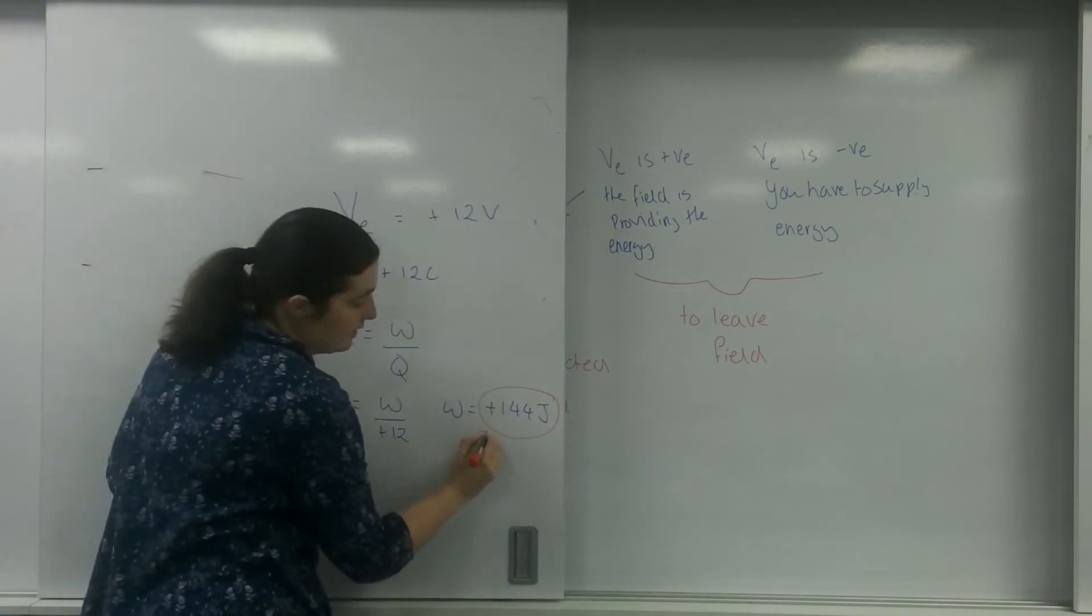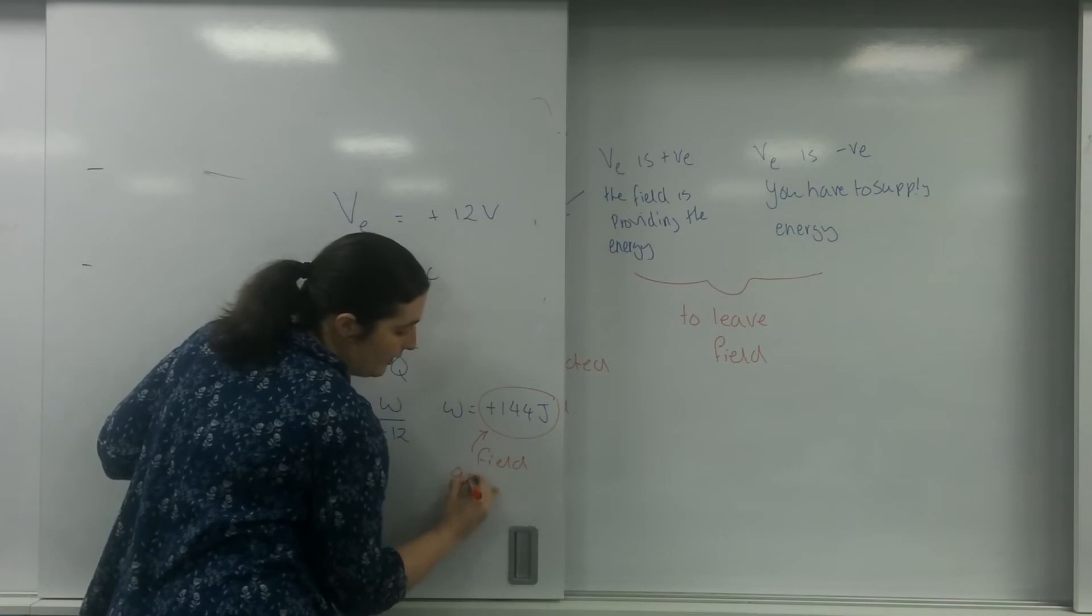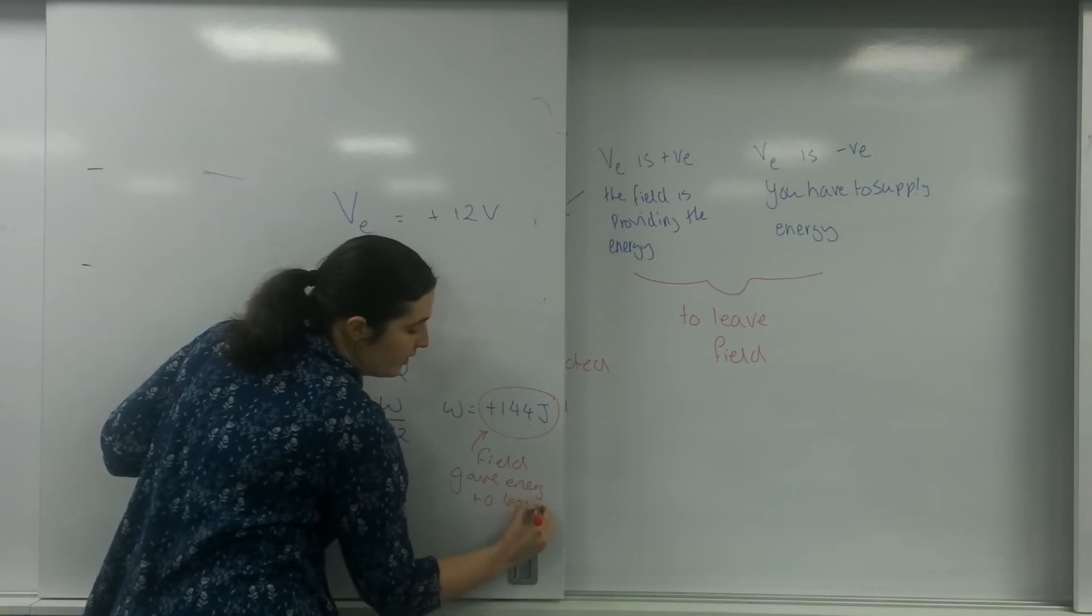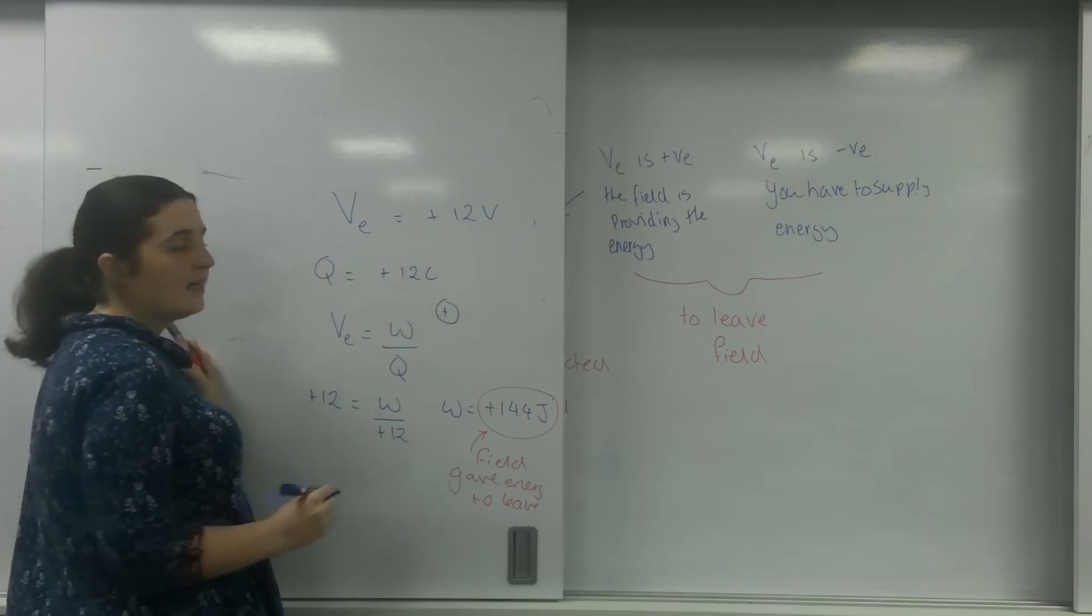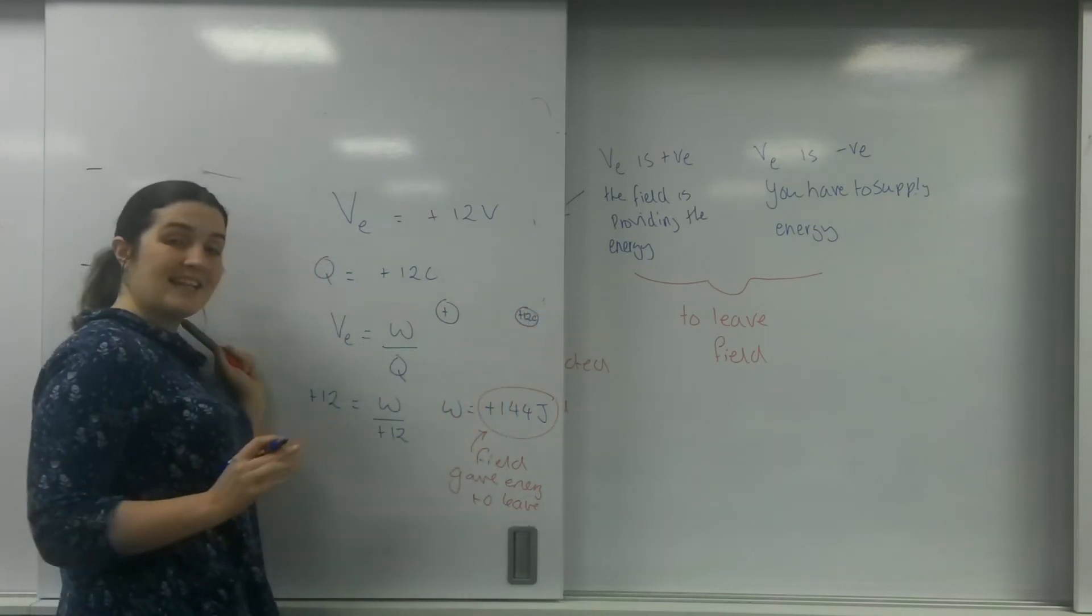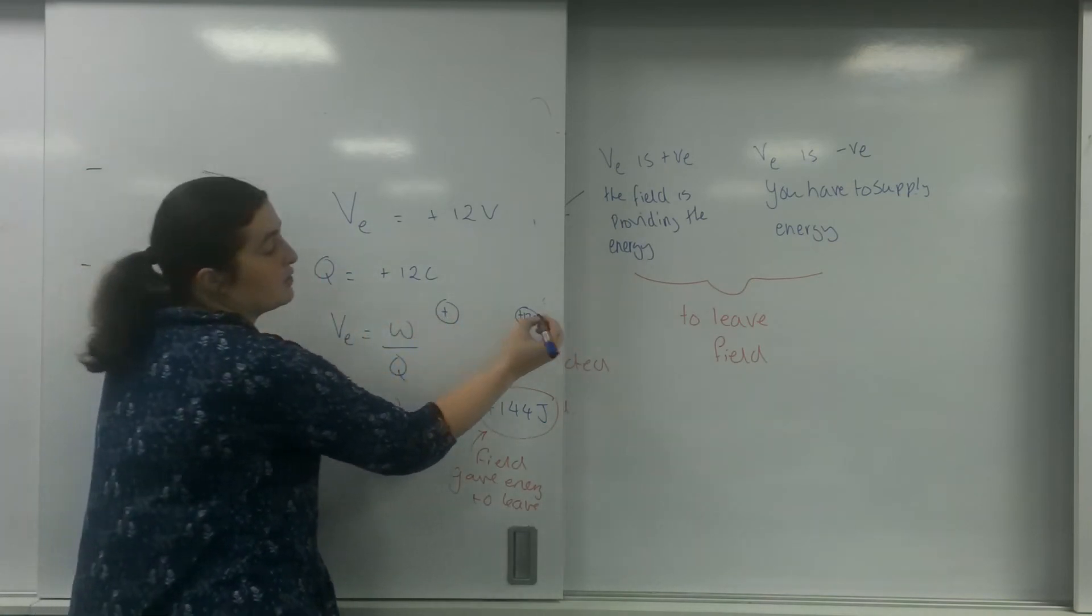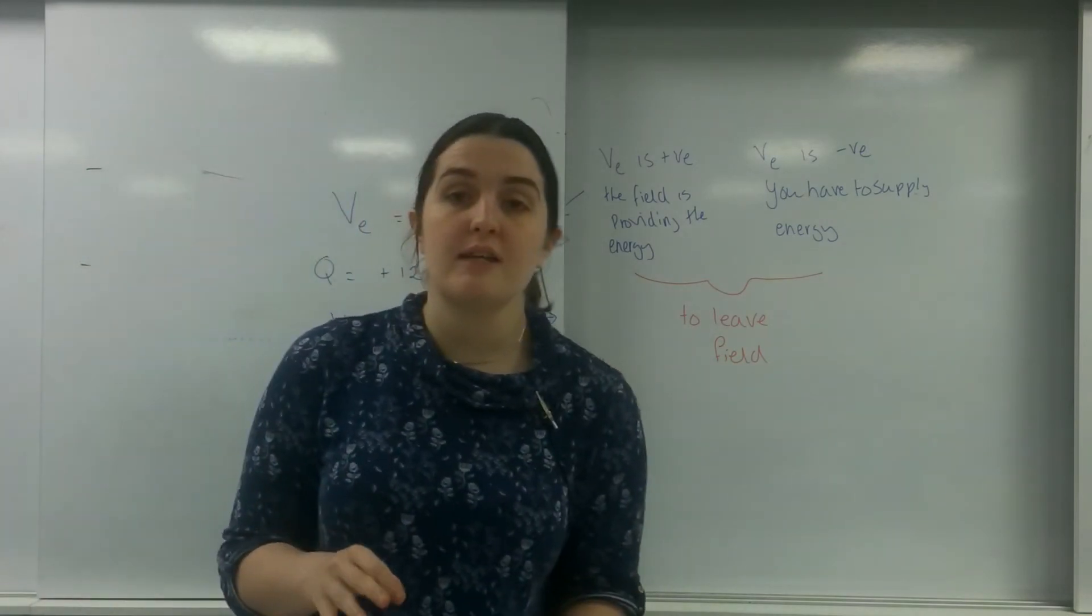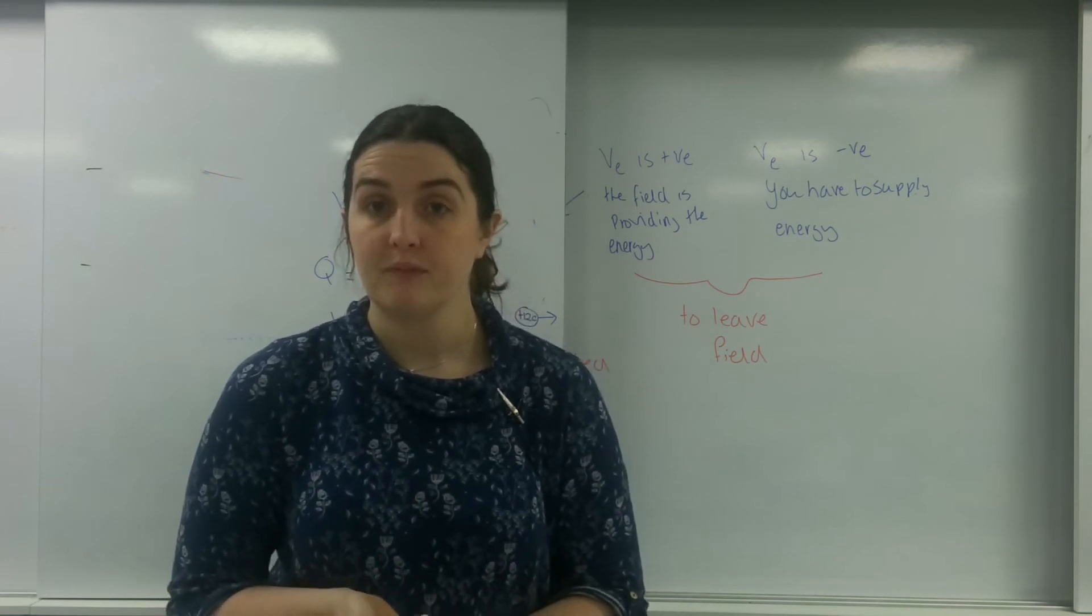This means the field gave energy to leave. So what this means here, my positive field here, this positive 12 coulombs charge that's in that field, is going to be given energy by the field to leave. And you can tell that because it's going to be repelled. So this positive and negative is ridiculously important for potential.